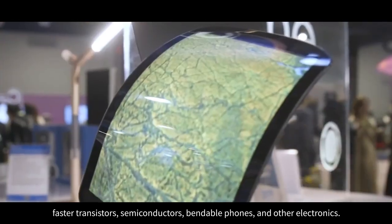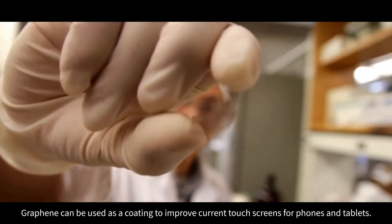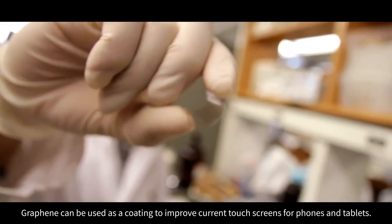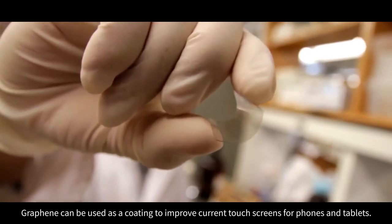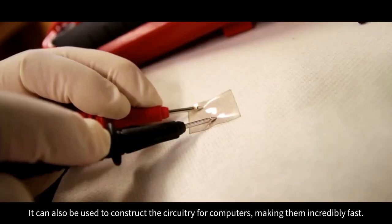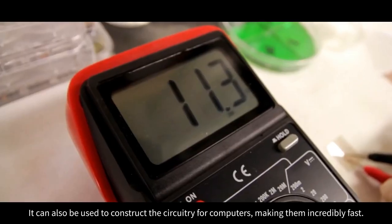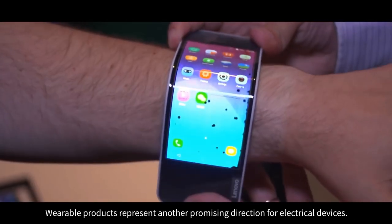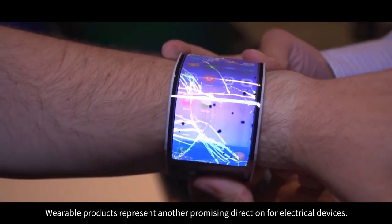Graphene presents great potential in the next generation of electronics: faster transistors, semiconductors, bendable phones, and other electronics. Graphene can be used as a coating to improve current touch screens for phones and tablets. It can also be used to construct the circuitry for computers, making them incredibly fast.